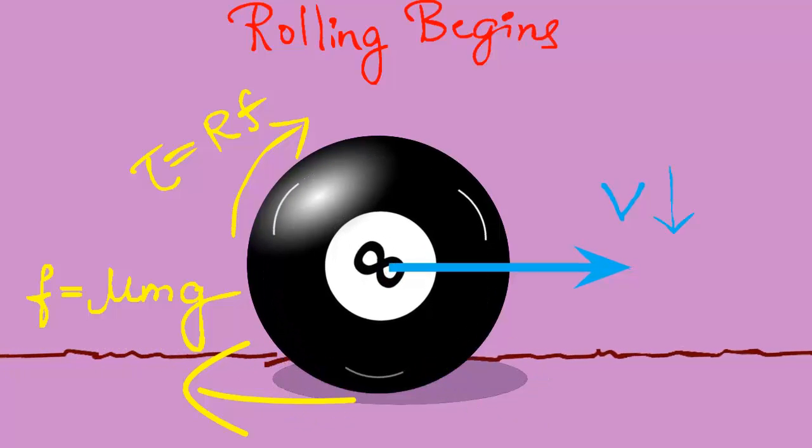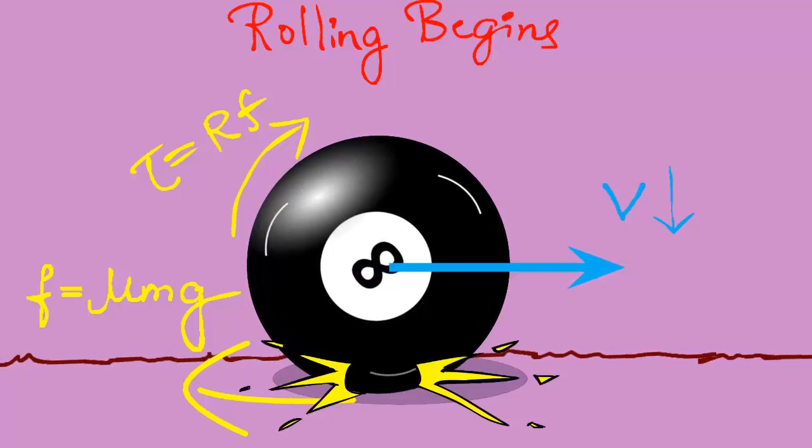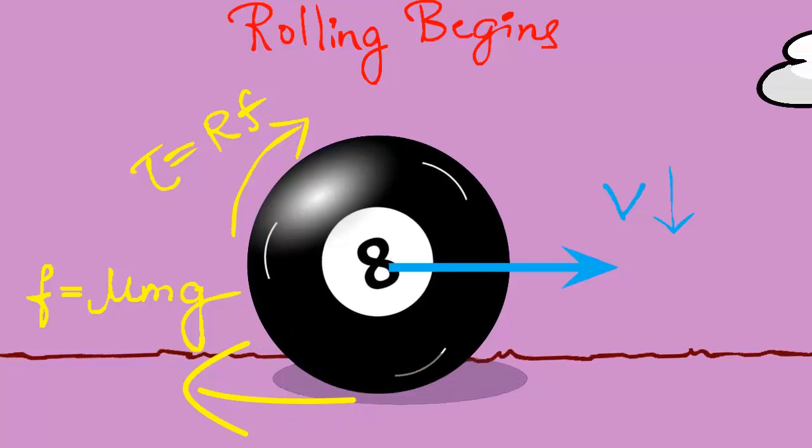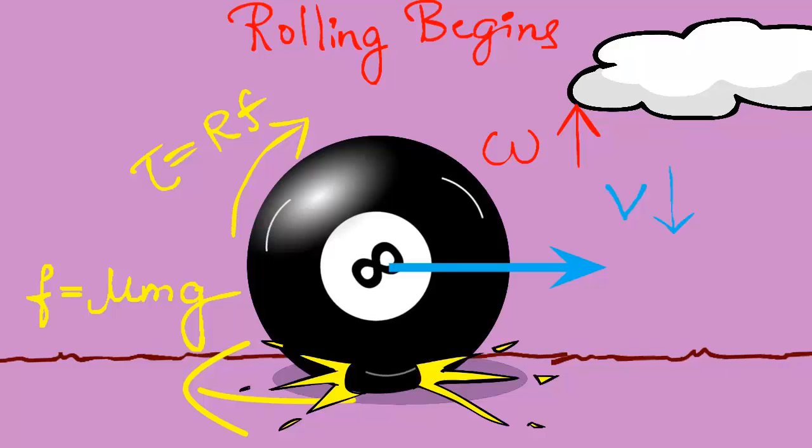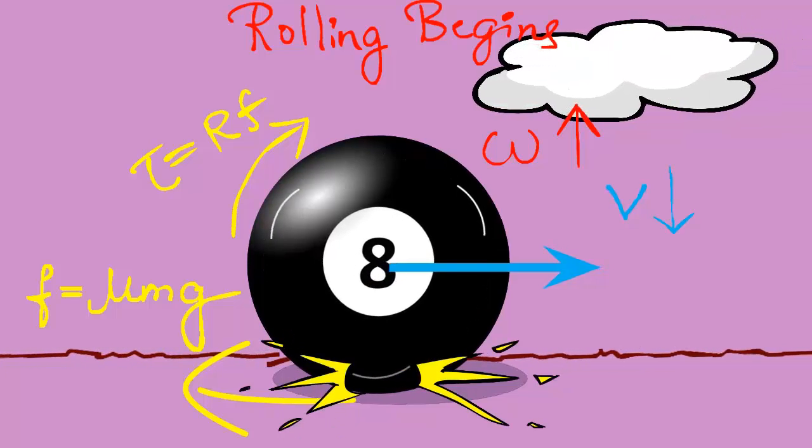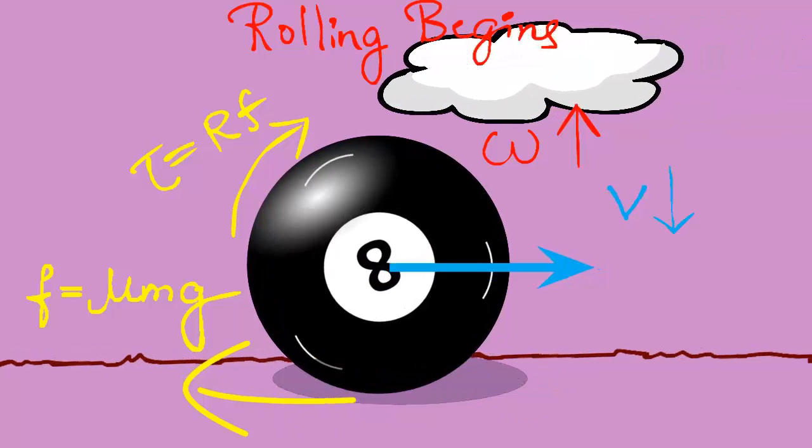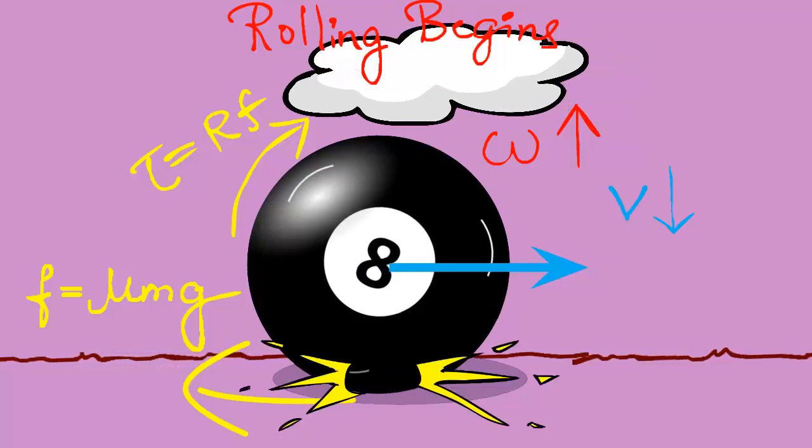Since the rolling has just begun, it is still not pure. There is still a lot of sliding going on. And so friction will keep producing more and more spin until finally it gets just the right angular speed that it goes into a pure roll.